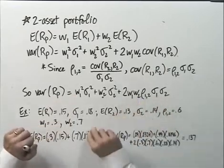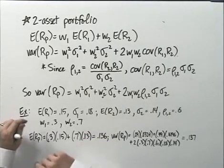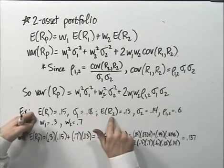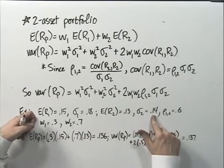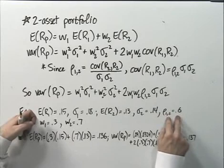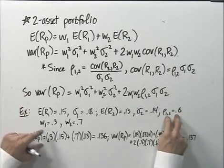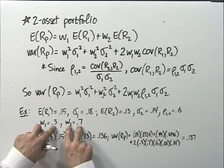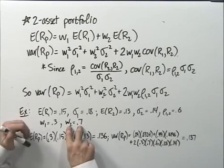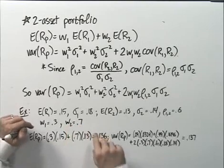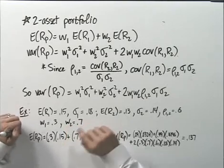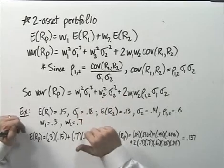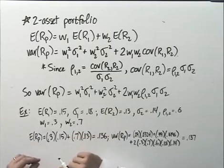Let's do a little example to put these terms to work. Suppose the expected return on asset 1 is 15% with a standard deviation of 18%. The expected return on asset 2 is 13% with a standard deviation of 14%. The correlation between those two returns is 0.6 — a fairly high positive correlation, but not a perfect correlation. Suppose you have 30% of your portfolio in asset 1 and 70% in asset 2. Given these numbers, we can calculate the expected return and the variance of this particular portfolio.